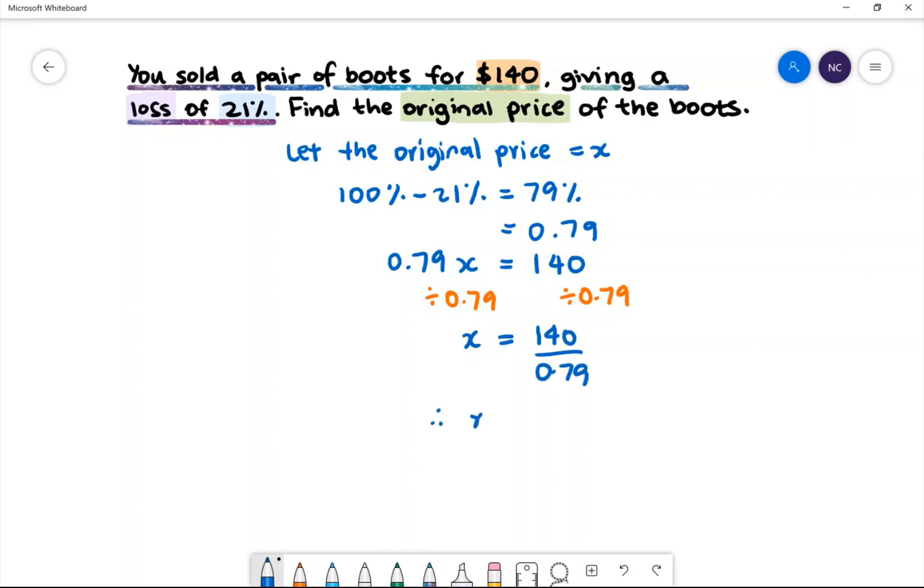Therefore, we'll have x equals $177.22. Therefore, the original price of the boots was $177.22.